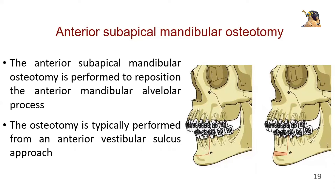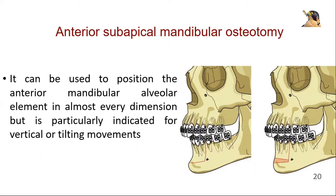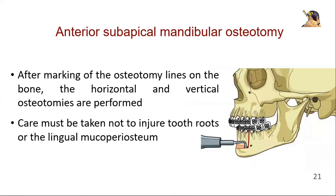Now let's discuss the anterior subapical mandibular osteotomy. The anterior subapical mandibular osteotomy is performed to reposition the anterior mandibular alveolar process. The osteotomy is typically performed from an anterior vestibular sulcus approach. It can be used to position the anterior mandibular alveolar element in almost every dimension, but is particularly indicated for vertical or tilting movements. After making the osteotomy lines on the bone, the horizontal and vertical osteotomies are performed. Care must be taken not to injure tooth roots or the lingual mucoperiosteum.